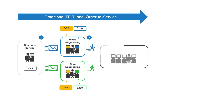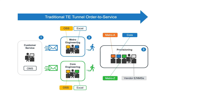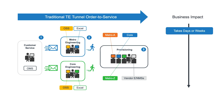If there isn't an existing tunnel, the engineer needs to manually design and provision a new one. They need to map the network topology, evaluate current network performance across different segments, and use external offline planning tools to compute a new path. Once they have that path information, they must manually provision the tunnel via disparate CLIs of multiple vendors in the network. If the tunnel spans multiple autonomous systems, they may need to provision a pair of border routers to stitch those AS segments together. Service fulfilment can take days or weeks.